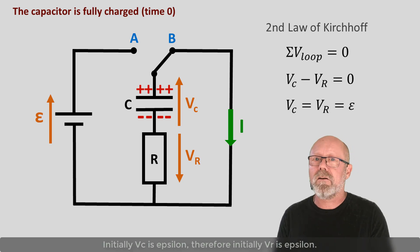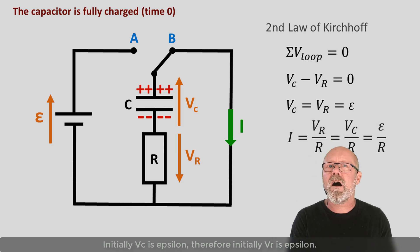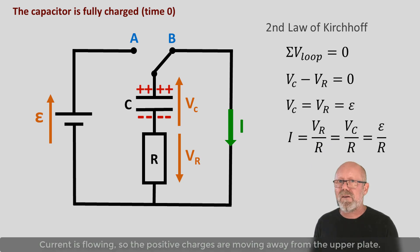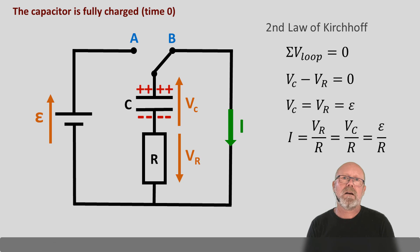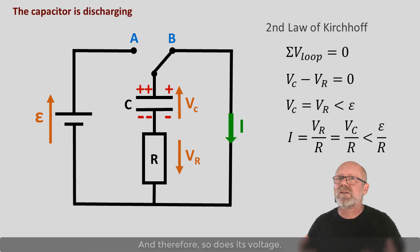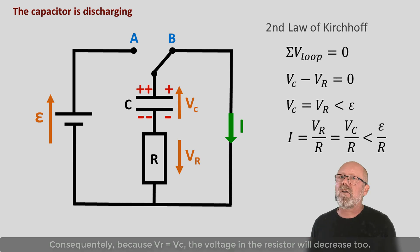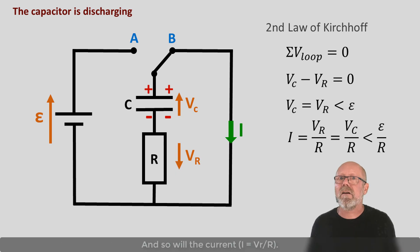Initially, VC was epsilon. Therefore, initially, VR is epsilon. Current is flowing. So the positive charges are moving away from the upper plate. The amount of charge packed in the capacitor decreases readily. And therefore, so does its voltage. Consequently, because VR equals VC, the voltage of the resistor will decrease too. And so will the current, I equals VR over R. We say here that the capacitor is discharging.